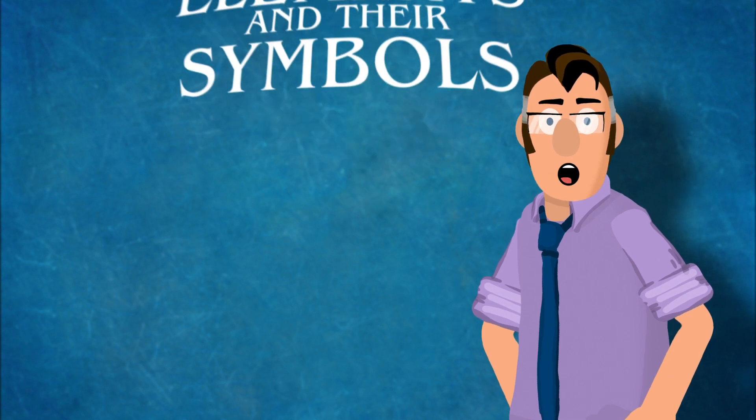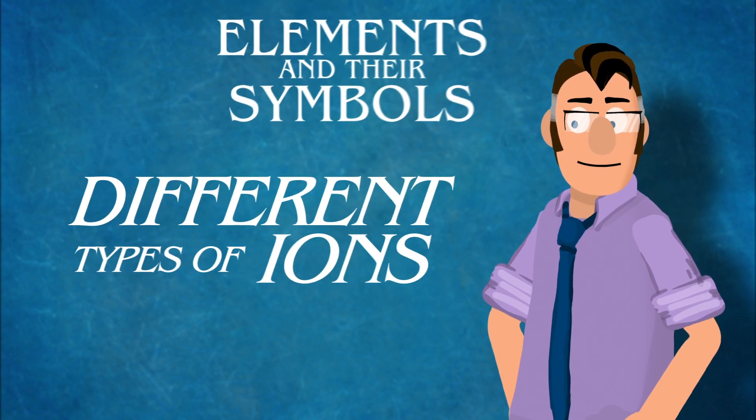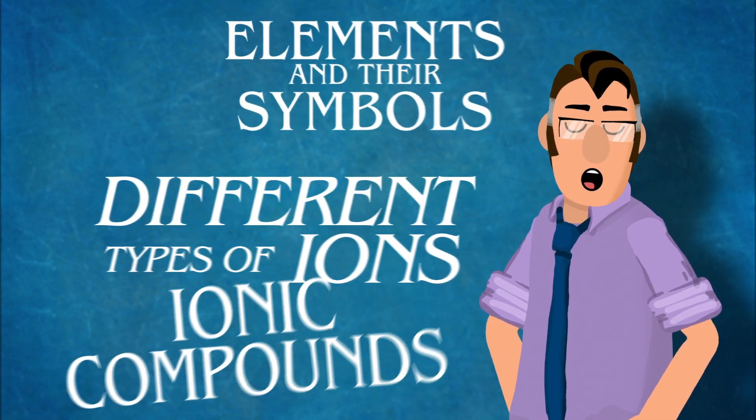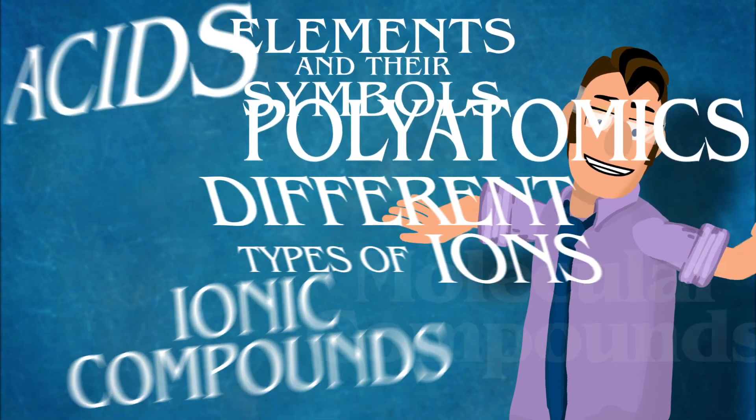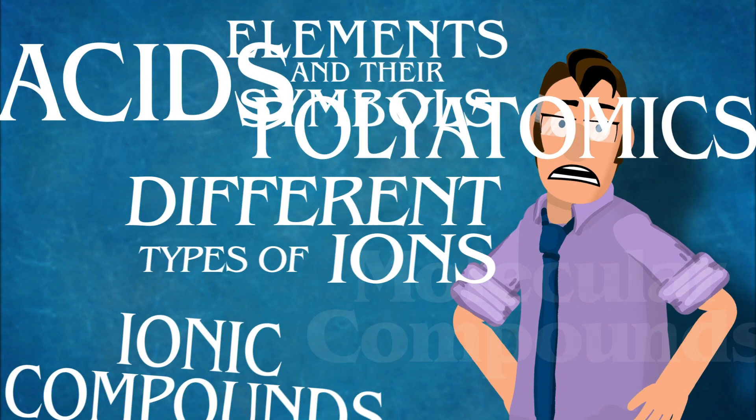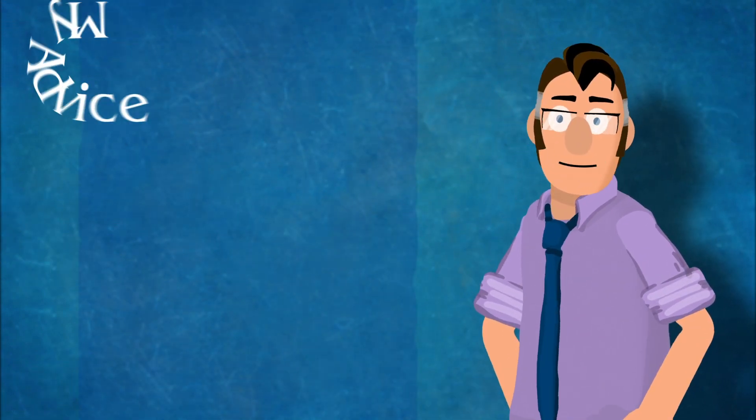Obviously this starts with knowing the elements and their symbols, but then there are the rules for different types of ions and for ionic compounds and for molecular compounds, throw in polyatomic ions, take into account the adjustments for naming acids, and don't forget to spell everything correctly because if you change one letter, you change the compound. It's a lot and don't let anyone tell you otherwise.